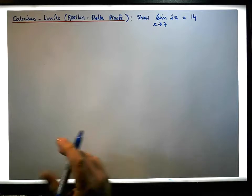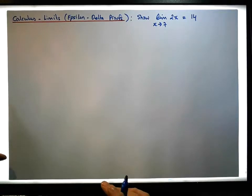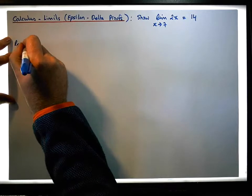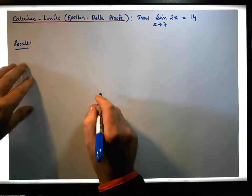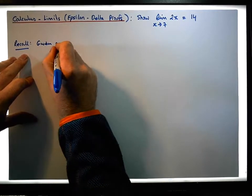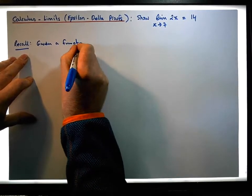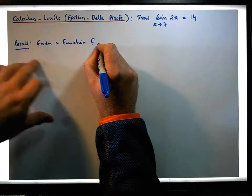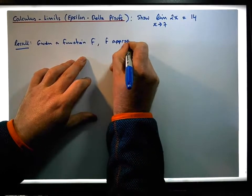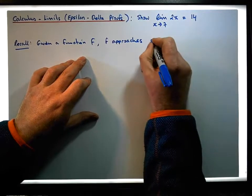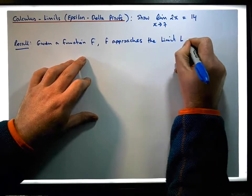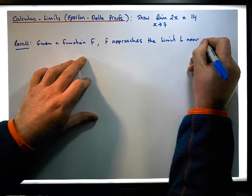Let's just recall this epsilon-delta definition of a limit. So what we have is this: given a function f, well then f approaches the limit L near a, if...